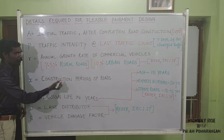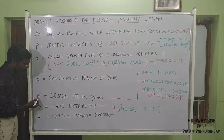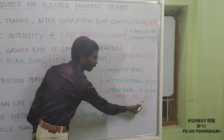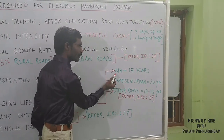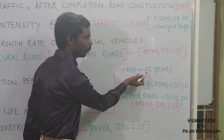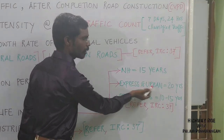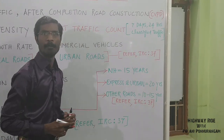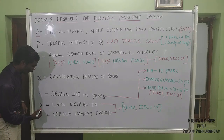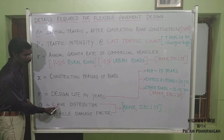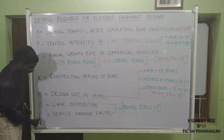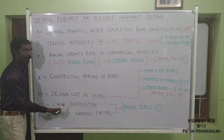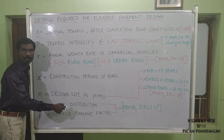The next input is small x — the Concession Period of Roads. Small n is the Design Life in years, available in IRC 37: National Highways have a design life of 15 years, Expressways and Urban Roads 20 years, and all other roads 10 to 15 years. Capital D is the Lane Distribution Factor, and F is the Vehicle Damage Factor. Both D and F can be referenced from IRC 37.